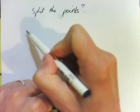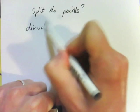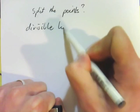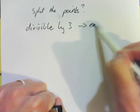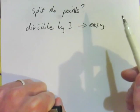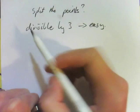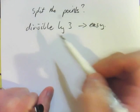If it's divisible by 3, it's really easy. As I did with my 12 one, you just split it into 3 groups of 4. If it's not divisible by 3, it gets a bit trickier.